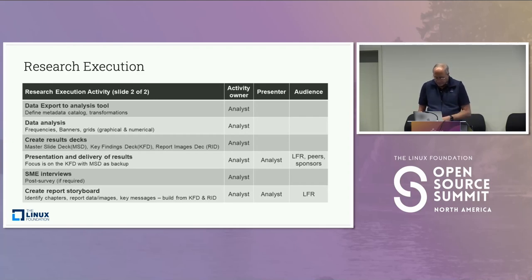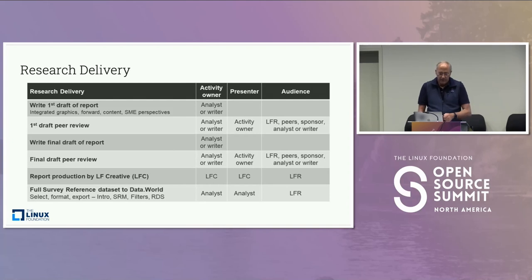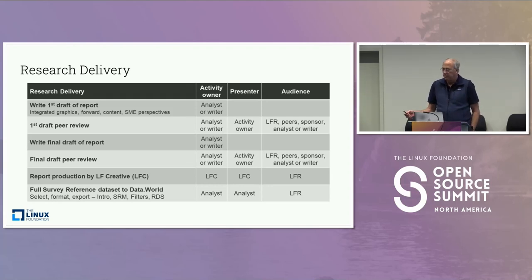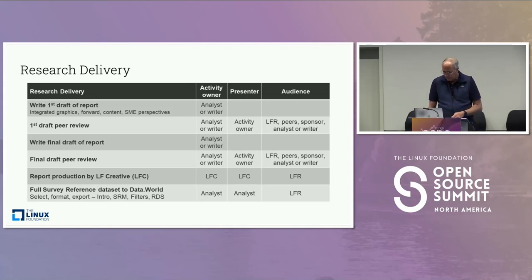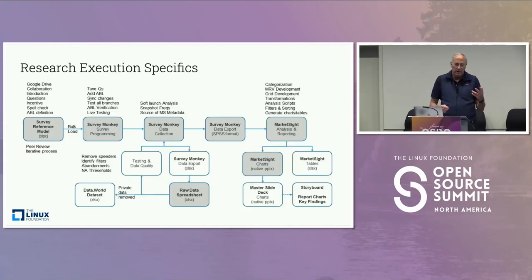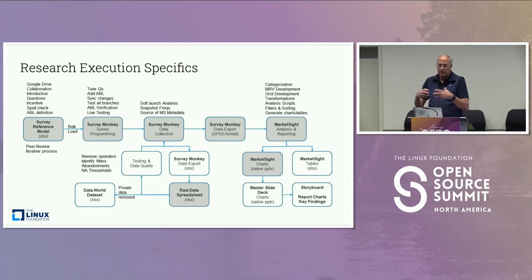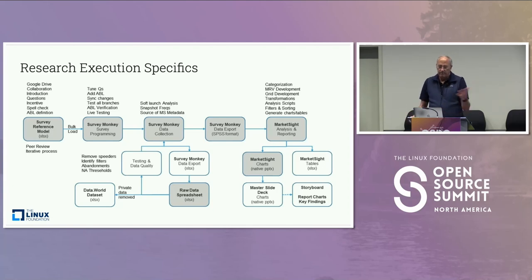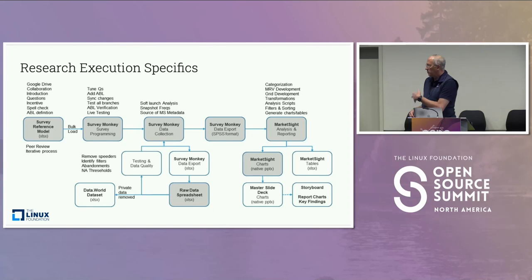We can't be experts in everything we do. For the delivery process, there are massive review cycles with stakeholders, then we hand it off to the creative team and they make it look beautiful. We put all the data out on data.world. This process is really nice because there are four of us doing research hands-on, and if anyone has to step away, anybody can pick it up without loss of time because we all follow the same process and use the same terminology and nomenclature.